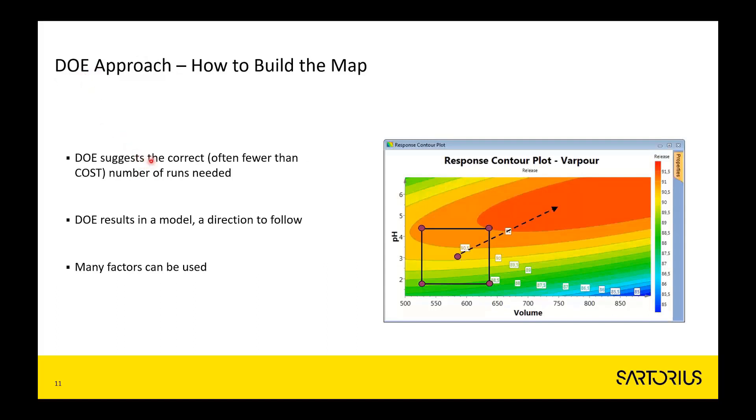DOE often suggests a better number of experiments, and often fewer than COST. When you have two factors to change—pH and volume—the DOE protocol takes the shape of a square where you put one experiment in each corner, and then optionally add a couple of experiments to represent variation in the inner part of this square.